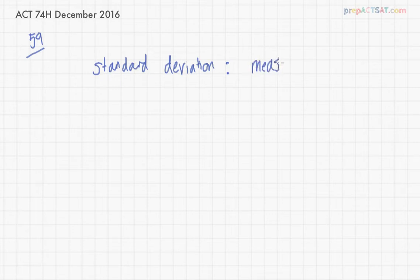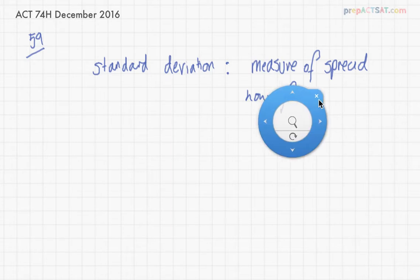But basically it's what statisticians call a measure of spread. I'm really just writing here so that I've got something going on on the screen. Standard deviation is a measure of spread, so it measures how far the data is from the mean, or how far most of the data is from the mean.